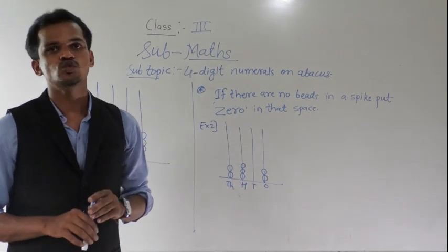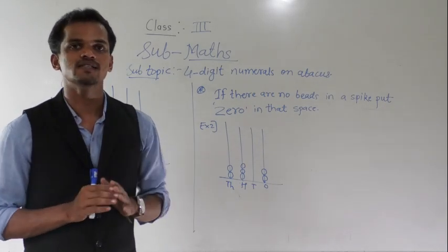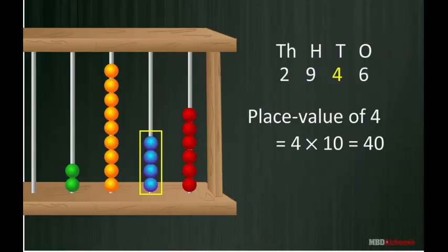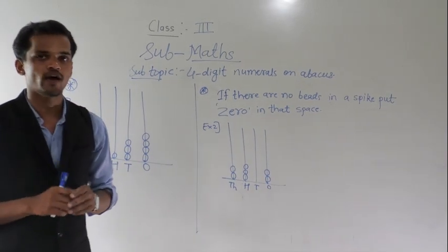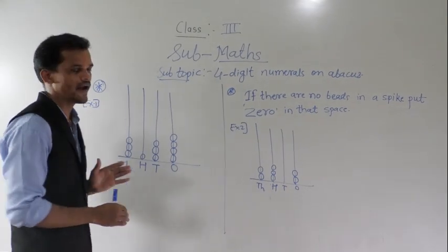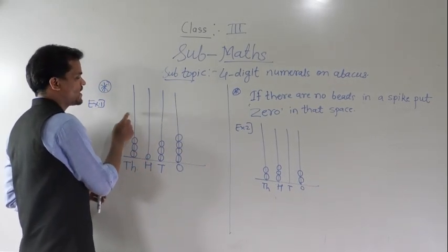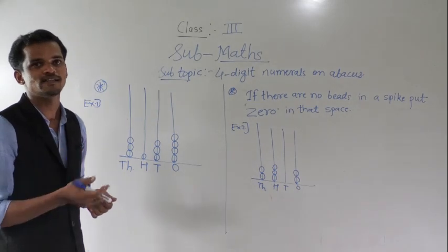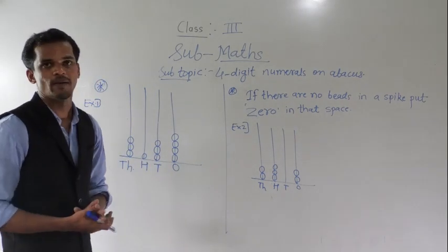We will see how to show the four digit number on abacus. Abacus is a mathematical instrument and we can show any number on it. To show four digit numbers, the abacus should have four spikes. Starting from the extreme right: ones place, tens place, hundreds place, and thousands place. The beads show how many ones, tens, hundreds, and thousands respectively.